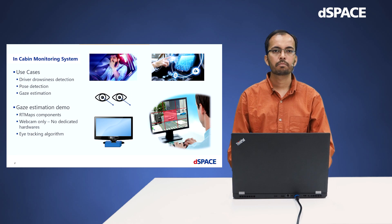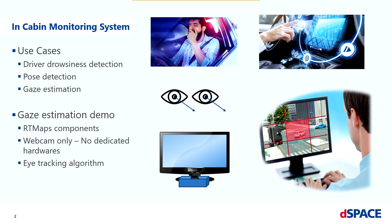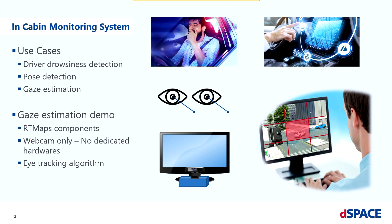In-cabin monitoring systems can have multiple use cases like driver drowsiness detection, pose detection, gaze estimation, and many others. Implementation of these use cases makes autonomous driving safer and more conceivable. We can identify where the person is looking and which information is missed by the driver from the gaze estimation in an in-cabin monitoring system.